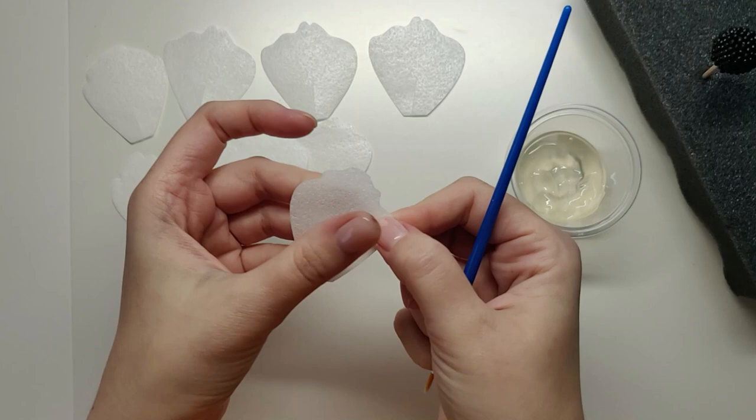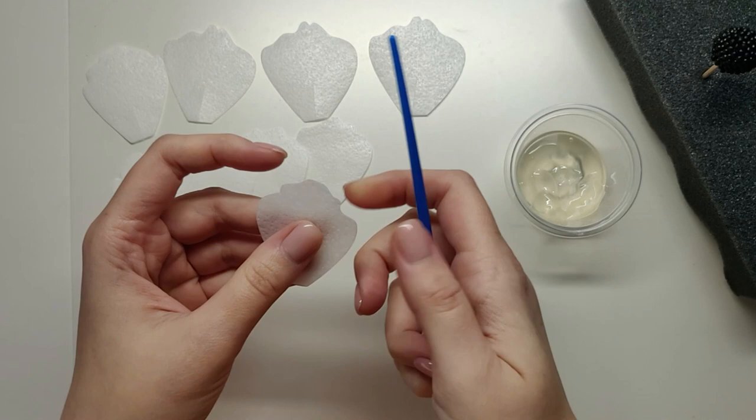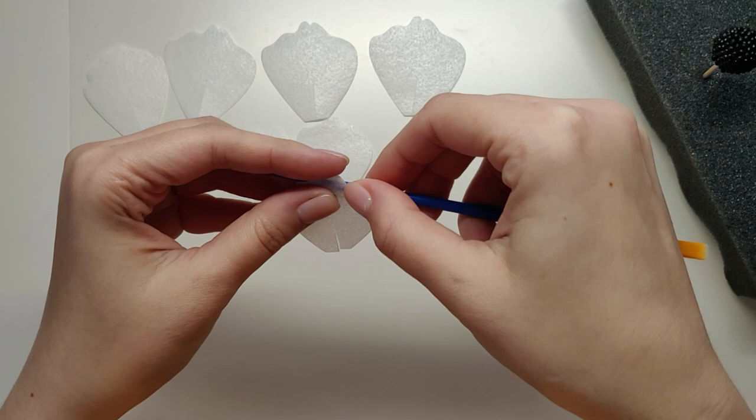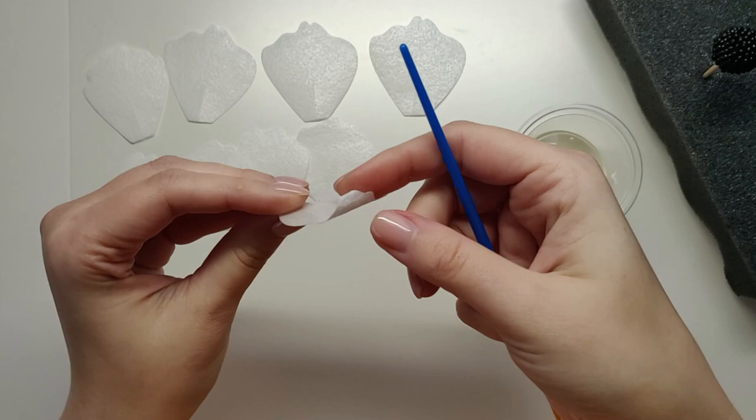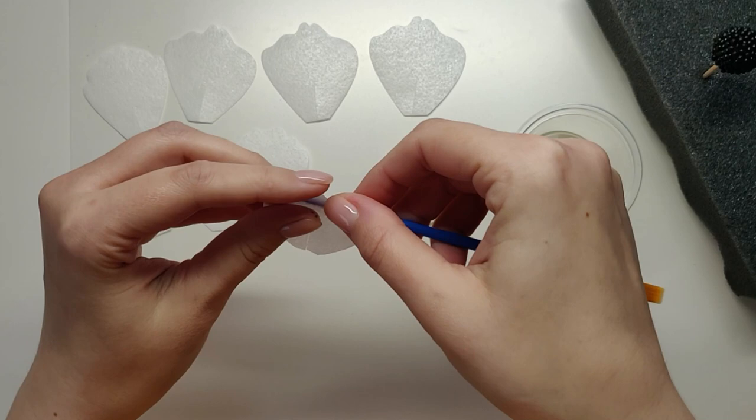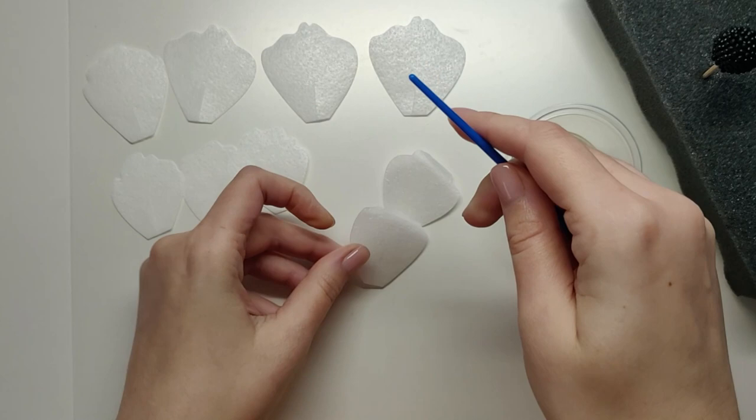You can see the wafer paper has two sides. I prefer to use the bumpy side as my face side, and I'm just using my brush to curl petals outward a little bit to give it some shape. You don't need to do this, but because wafer paper is so flat, I think using this simple technique to shape your petals is a nice way to add some movement to the flower.